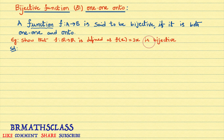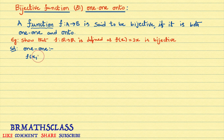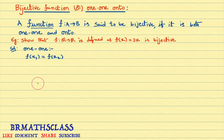The definition of bijective function: if the given function is both 1-1 and onto, then we say that function is bijective. First, I'll check the 1-1 function. How do we check if a function is 1-1 or not? To check the given function is 1-1, first we consider f(x1) equal to f(x2). You simplify this, and at the end, if you get x1 equal to x2, then we can say that the given function is 1-1.